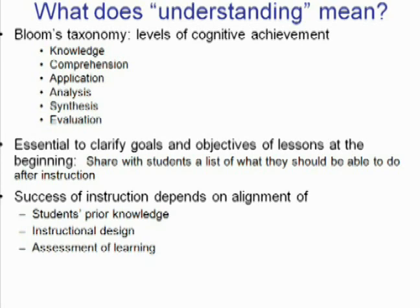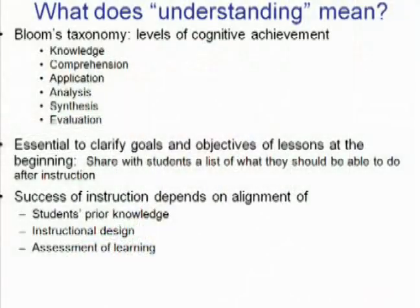As Bloom pointed out long ago, there are different levels of cognitive achievement ranging from knowledge all the way to evaluation. Knowledge, according to Bloom, just means having rote knowledge of something. For example, students might know that acceleration is the rate of change of velocity with time, and this may just be rote knowledge. So if an instructor asked students to calculate the average acceleration for a case where a car was moving at 60 miles per hour north and then started moving at 30 miles per hour west...